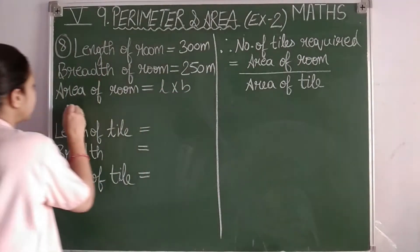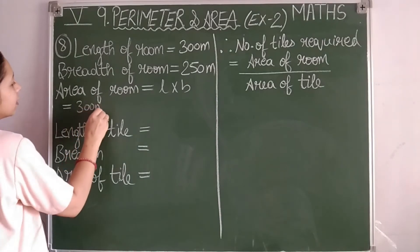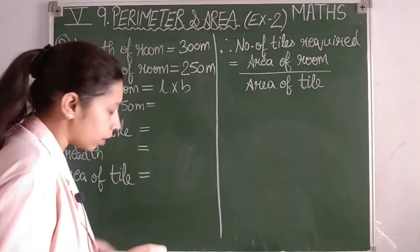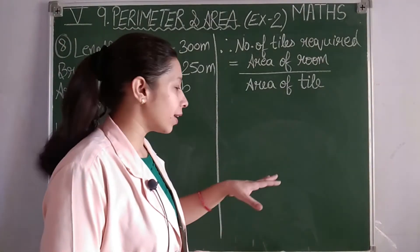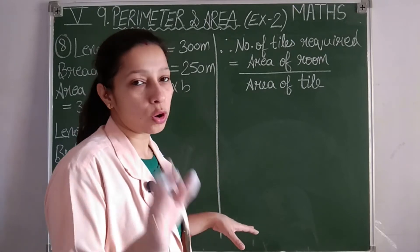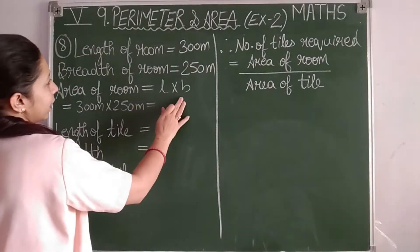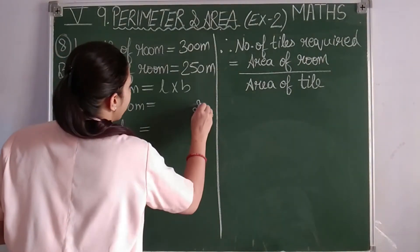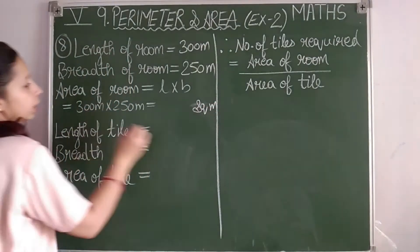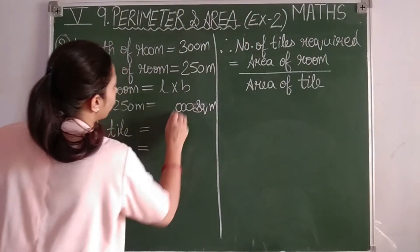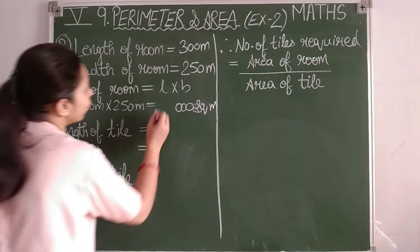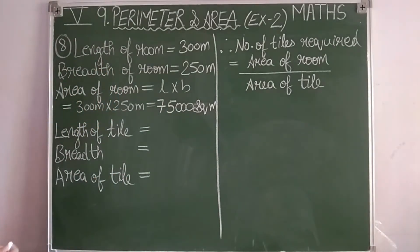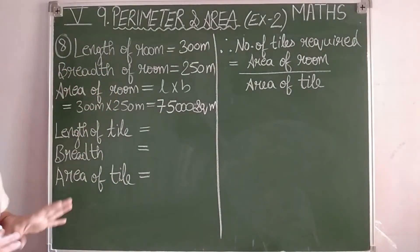Area of room equals length into breadth, that is 300 meters into 250 meters. Multiplying: 25 threes are 75, and adding three zeros gives 75,000 square meters as the area of the floor.